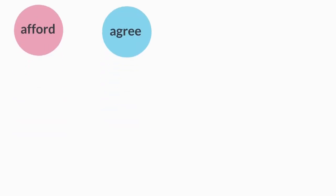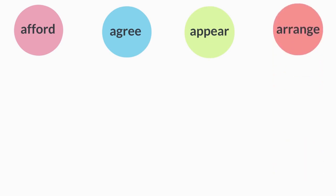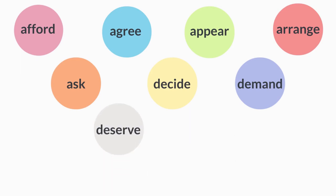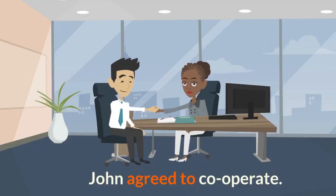Those verbs include: afford, agree, appear, arrange, ask, decide, demand, deserve, expect, and fail. For example: 'John agreed to cooperate.'